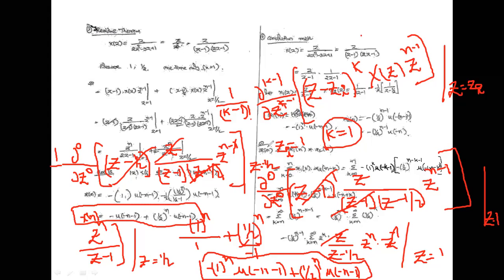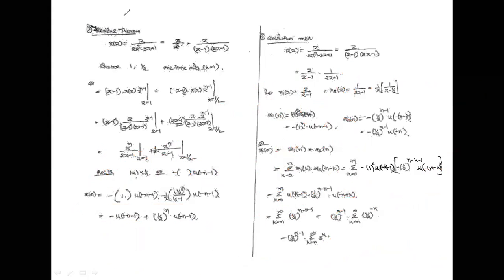Using the residue formula: [1/(k-1)!] · d^(k-1)/dz^(k-1) [(z-z_i)^k · X(z) · z^(n-1)] at z=z_i. Apply this formula to find x(n) from X(z) using the residue method for the given function.